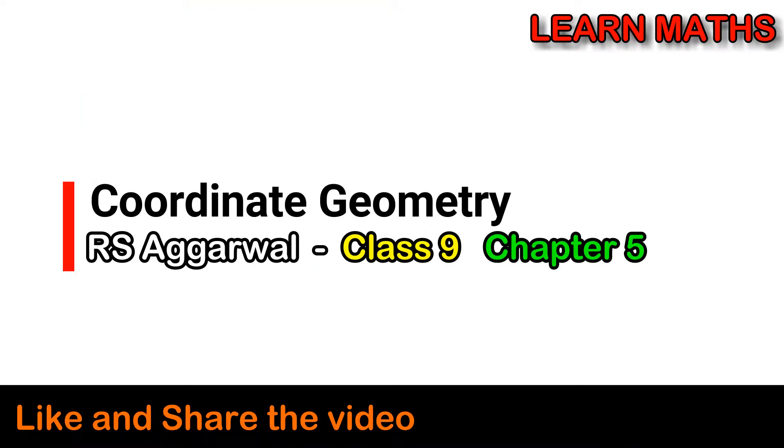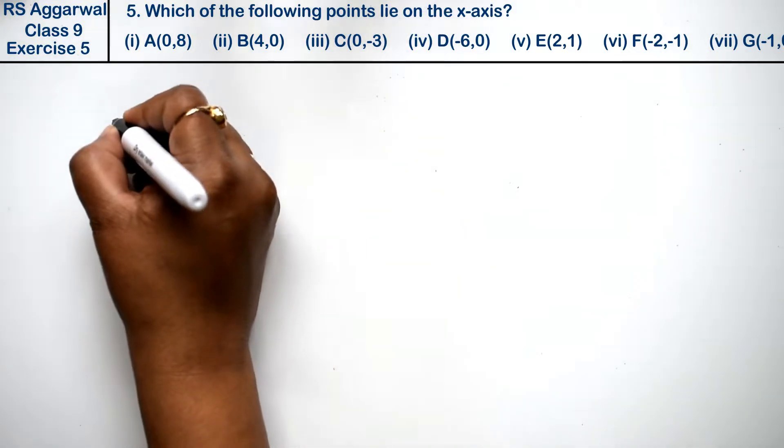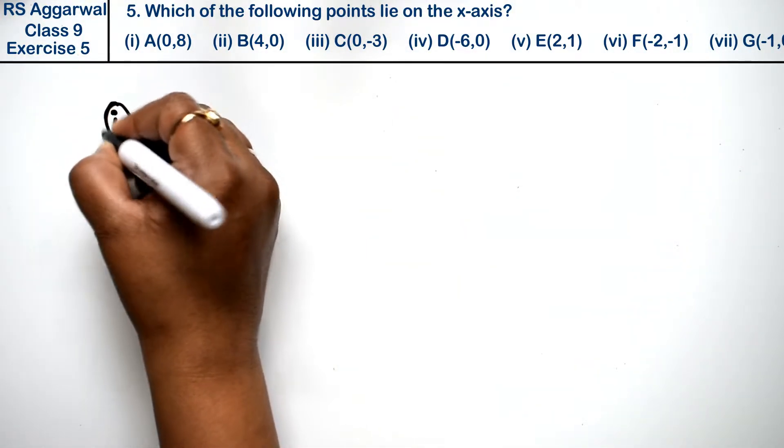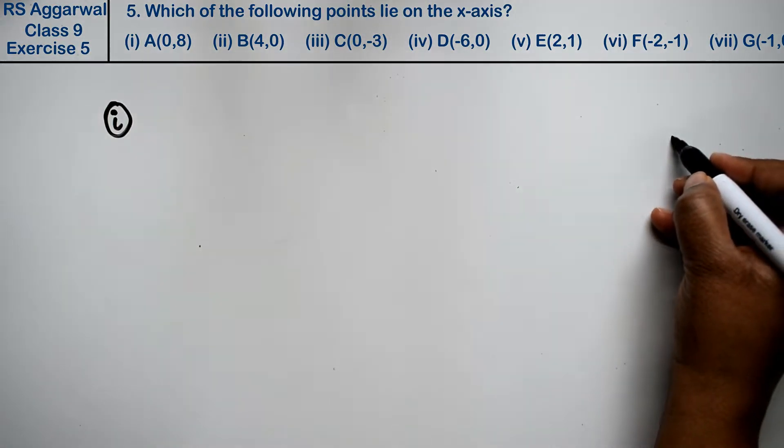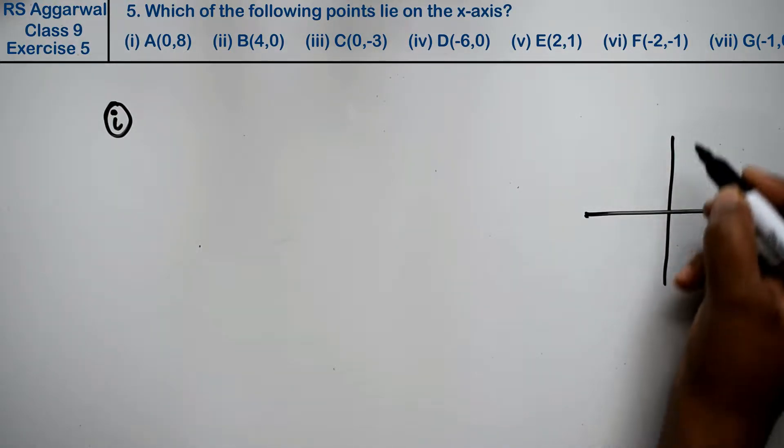Let's do question number 5 of exercise 5, that is coordinate geometry. Question number 5 is which of the following points lie on the x-axis? Friends, let me tell you which points will lie on the x-axis. See, I am making a graph roughly. This is the x-axis here and this is the y-axis.